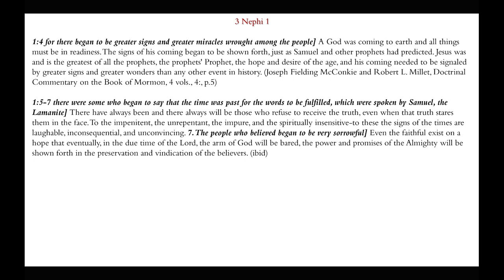Chapter 1, verses 5-7: the phrase 'there were some who began to say that the time was past for the words to be fulfilled which were spoken by Samuel the Lamanite.' There have always been and there will always be those who refuse to receive the truth even when the truth stares them in the face. To the impenitent, the unrepentant, the impure, and the spiritually insensitive, the signs of the times are laughable, inconsequential, and unconvincing. In verse 7, the people who believed began to be very sorrowful. Even the faithful exist on a hope that eventually, in the due time of the Lord, the arm of God will be bared and the power and promises of the Almighty will be shown forth in the preservation and vindication of the believers.